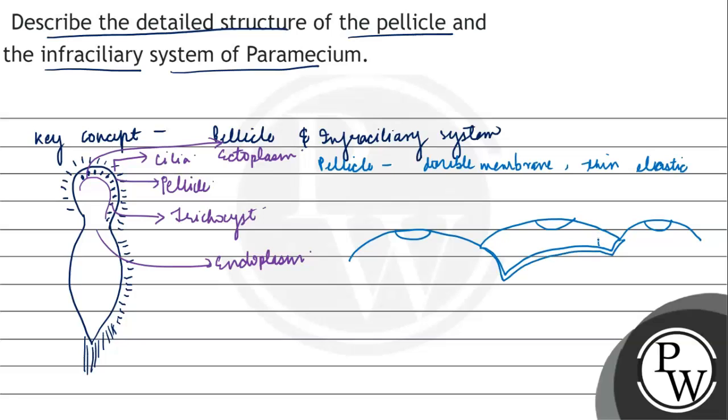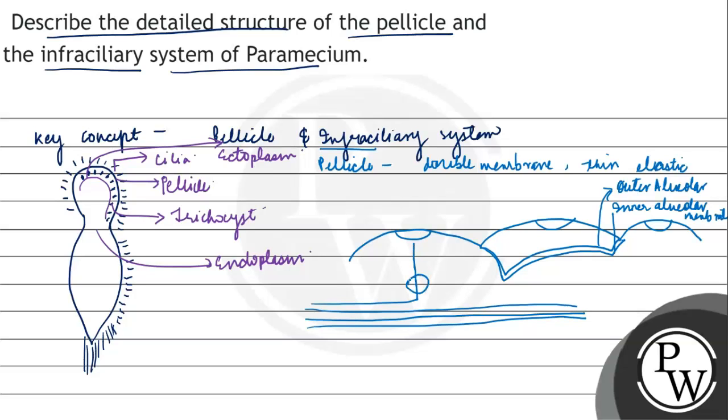Ek outer alveolar region, right? Apart from that, hum jab baat karenge infraciliary yaani ki hum bahut deep mein iski study karenge ki kaise pellicle kahan se originate ho raha hai, pellicle kya hai exactly, kahan se cilia originate kar raha hai. To uski jab bhi hum study karte hain, we see that there are certain kinetodesma and kinetozome